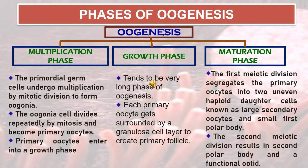In the maturation phase, the first meiotic division segregates the primary oocyte into two uneven haploid daughter cells known as the large secondary oocyte and the small first polar body. The second meiotic division results in the second polar body and a functional oocyte.